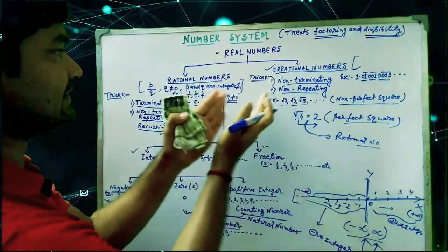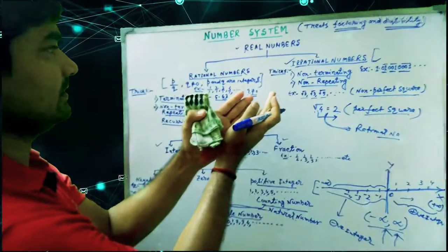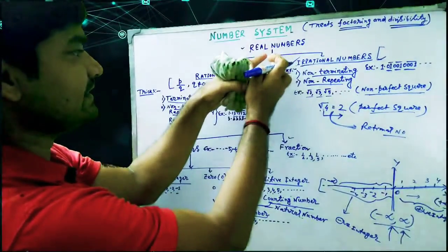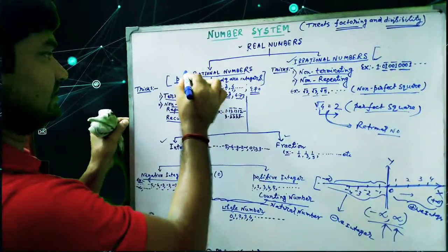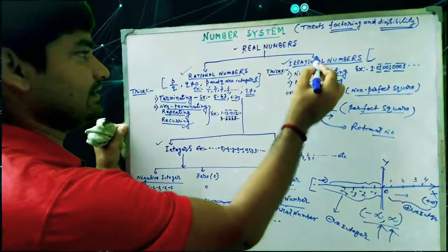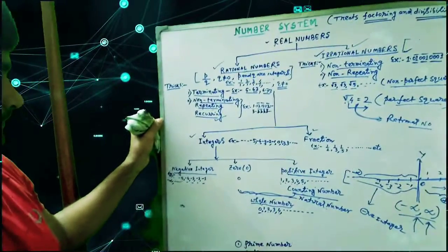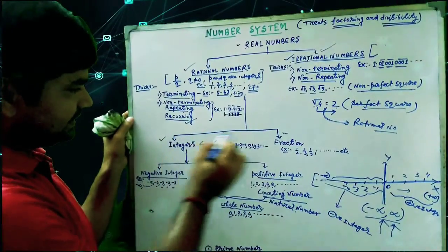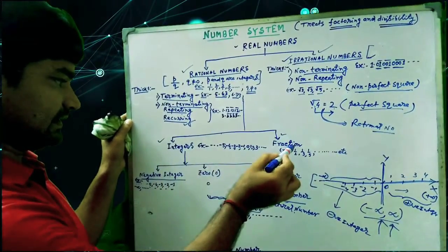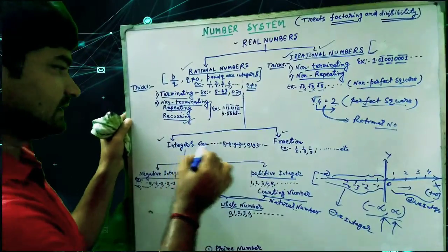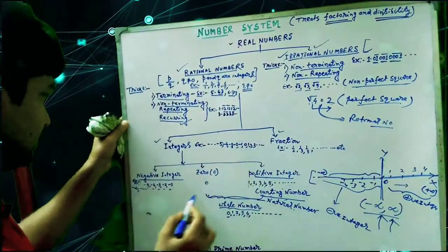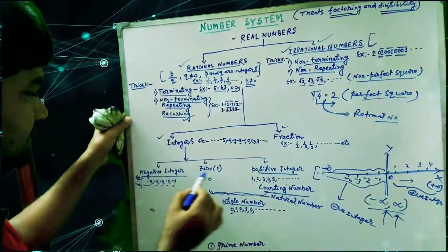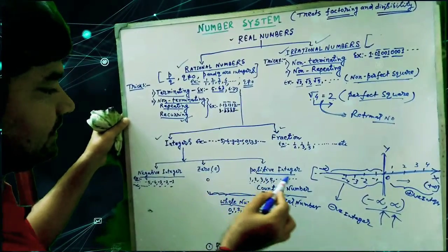So rational numbers plus irrational numbers together are called real numbers. Real numbers divide into two categories: rational numbers and irrational numbers. Rational numbers are categorized into two parts: integers and fractions. Integers are divided into three parts: negative integers, zero, and positive integers.